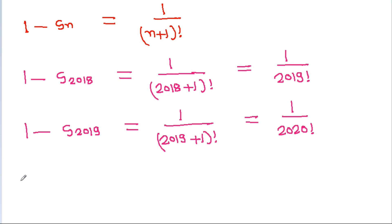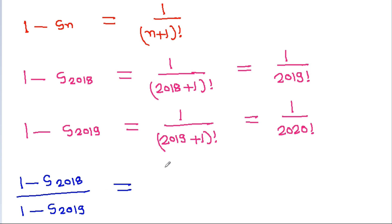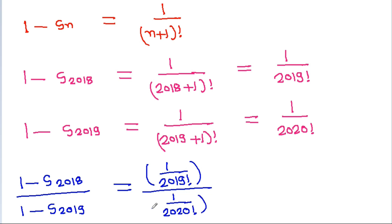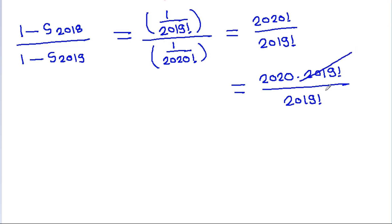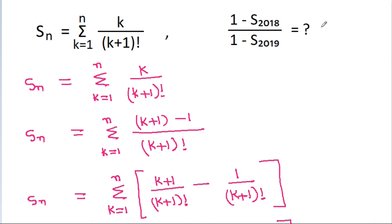We need to find (1 minus S₂₀₁₈) divided by (1 minus S₂₀₁₉). We have 1 minus S₂₀₁₈ equals 1/2019! and 1 minus S₂₀₁₉ equals 1/2020!. So the ratio is 2020!/2019! equals 2020 times 2019!/2019!, and 2019! cancels, giving the answer 2020.